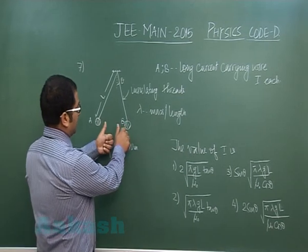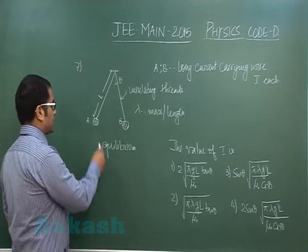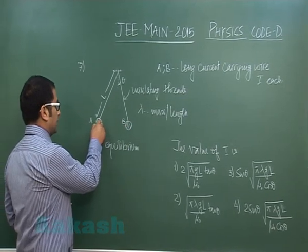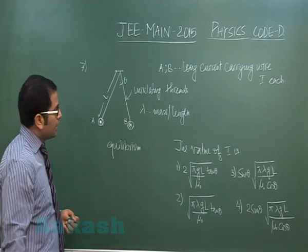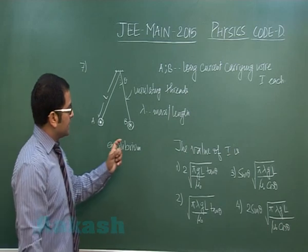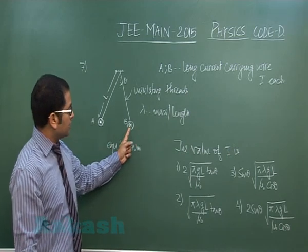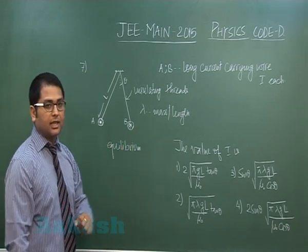So if they are in equilibrium there must be a repulsive force and if the forces are repulsive the direction of current has to be opposite and on the basis of this lambda is the mass per unit length of these two wires we got to calculate the value of I.